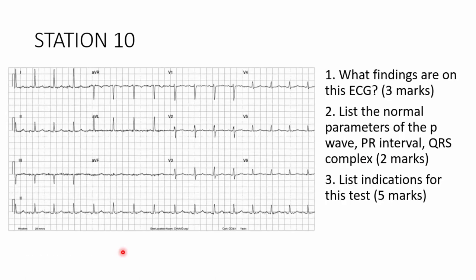Station 10 — the final station. If you haven't done ECG, this will be challenging. What findings are on this ECG? List the normal parameters of the P wave, PR interval, and QRS complex. List indications for this test. You can pause the video and increase quality to HD to see the ECG clearly.